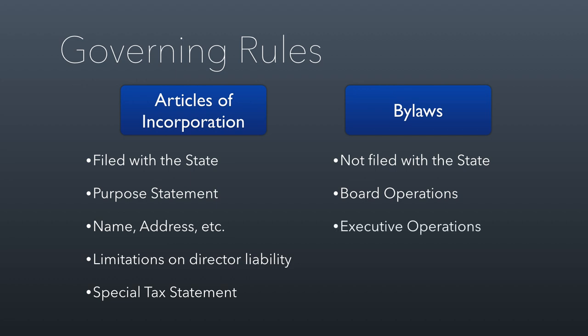The bylaws describe all the executive operations — who's the CEO, what's their job, whether there's a vice president and what their role is. You might also define miscellaneous operations like how bank accounts have to be managed. You really can put whatever you want in your bylaws. With assignment number one, I give you some sample bylaws to look at so you can see what's in a typical set of bylaws for a nonprofit.